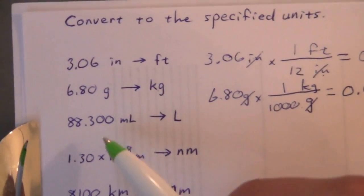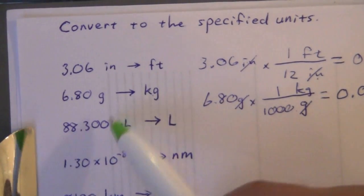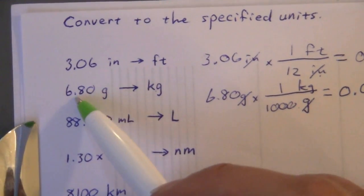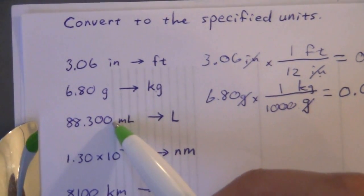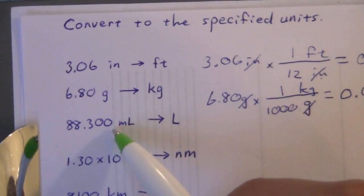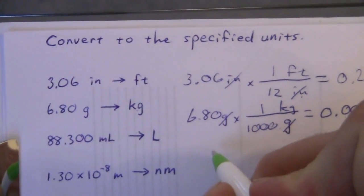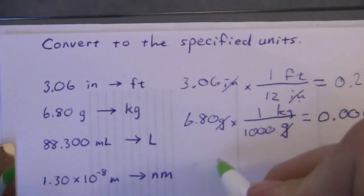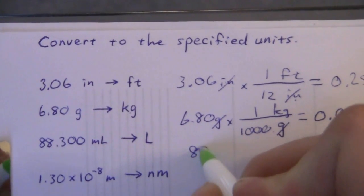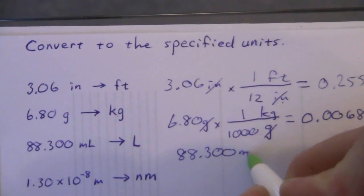Next: milliliters to liters — 88.300. Remember, trailing zeros after the decimal place are significant. So we have five significant figures, just like in the previous example where we kept three significant figures. Leading zeros are not significant. We want to keep the number of significant figures the same. So, 88.300 milliliters.